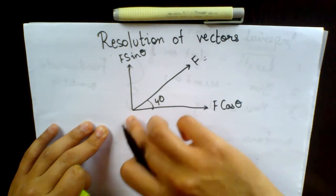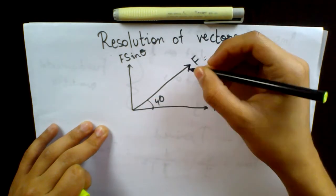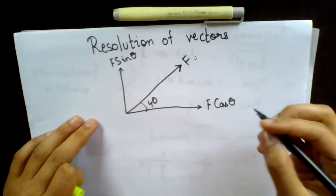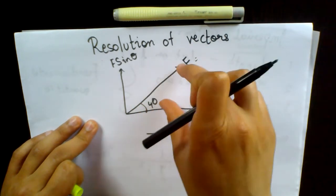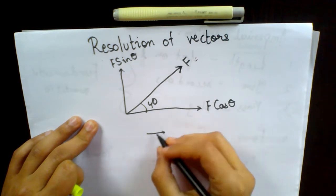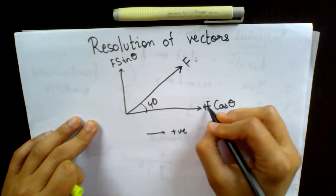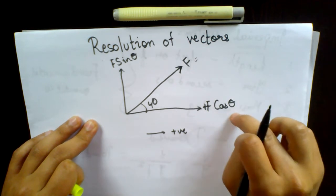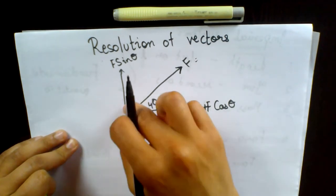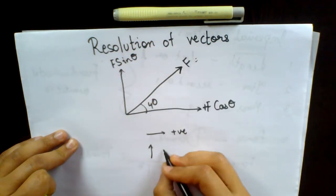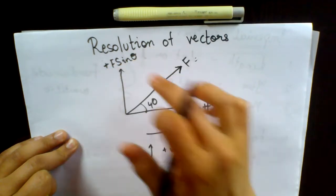Remember, the force is acting in the rightward direction, going at this angle. When a force is going to the right direction — that is towards the positive x-axis — it is positive, so this force will be plus F cos theta. And if the force is going in the upward direction, which is F sin theta, then the force will be positive, which is plus F sin theta.